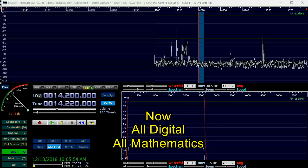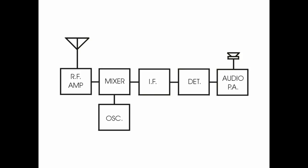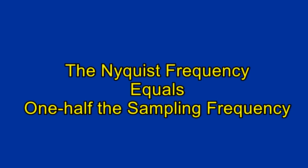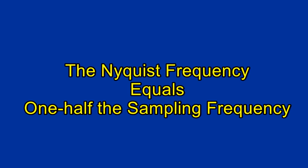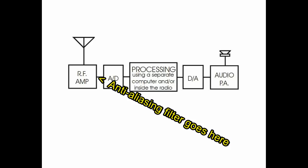I said earlier that this I and Q technique eliminated the need for a front-end filter to reject those unwanted images created in the superhet. That's true, but now we have another problem. Remember the Nyquist frequency — one half the sampling frequency? It turns out that if we allow any frequencies above the Nyquist frequency into our analog-to-digital converter, it mistakes them for lower frequencies — you can't have that. This is known as aliasing: a certain frequency is aliased to a lower frequency. We must eliminate those signals above the Nyquist frequency with a low-pass filter, an analog filter before the analog-to-digital conversion. That filter is called, not surprisingly, an anti-aliasing filter.